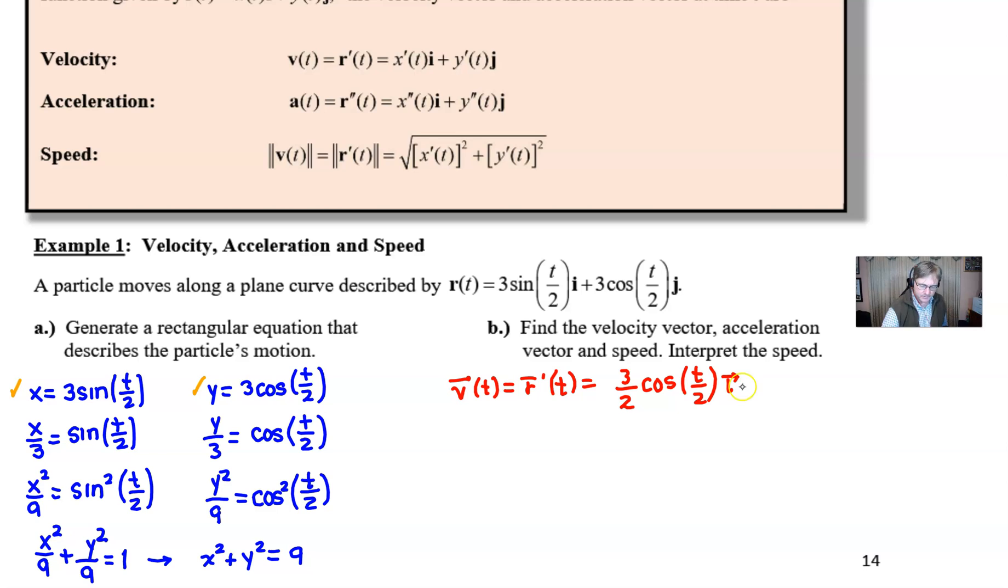Then we do the same thing over here. The derivative of 3cos(t/2) is (3/2)sin(t/2), but because the derivative of cosine is negative sine, we can just put a minus there. You could also say plus negative and that would have the same meaning. So now we're done with our velocity vector: v(t) = (3/2)cos(t/2)i - (3/2)sin(t/2)j. We move on to our acceleration vector.